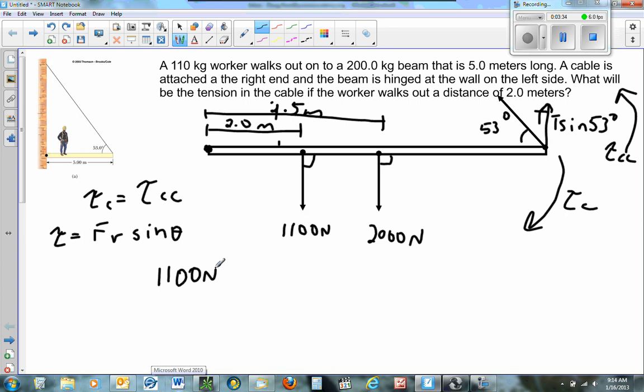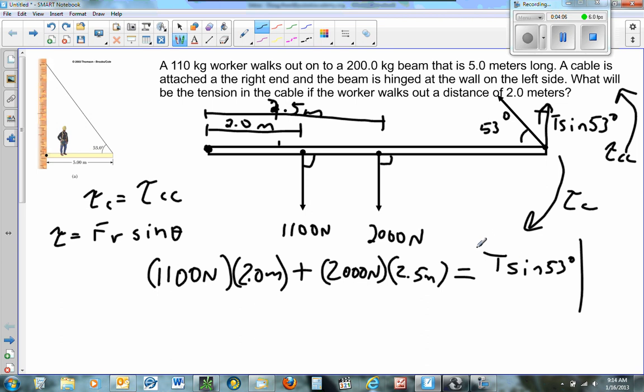1,100 newtons times how far away is he from the pivot point? 2 meters. Plus 2,000 newtons, how far away is that force from the pivot? And that is 2.5 meters. And that has to equal the counterclockwise force, which is T. I don't know that, that's what I'm looking for. Sine of 53 degrees times how far away is that from the pivot? And that is 5 meters.